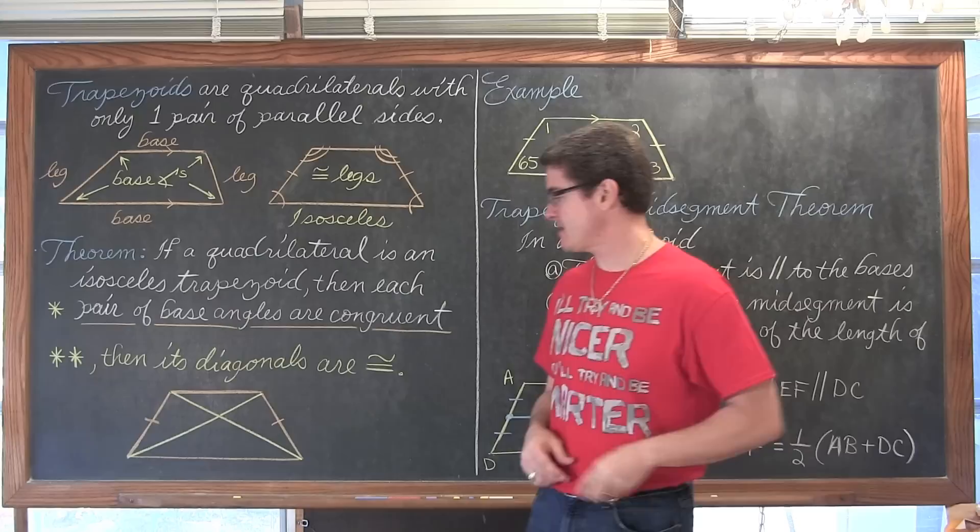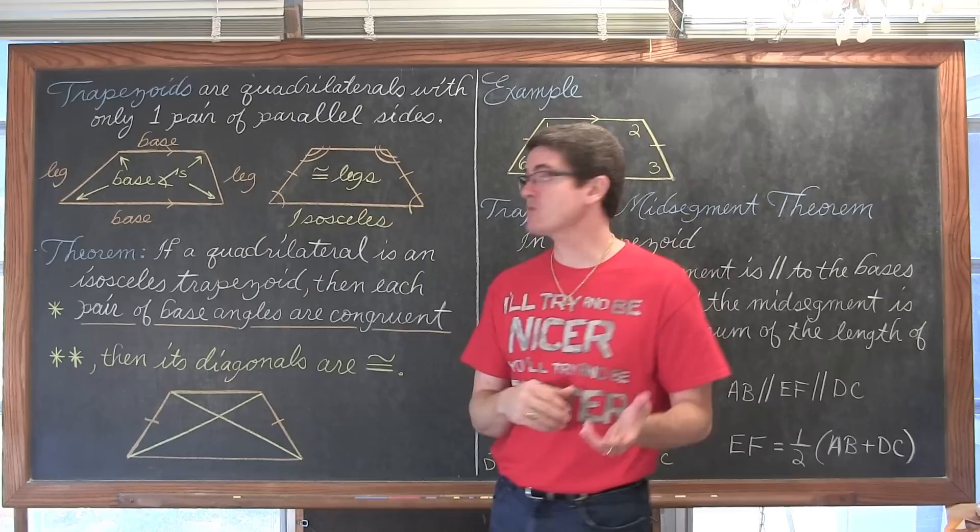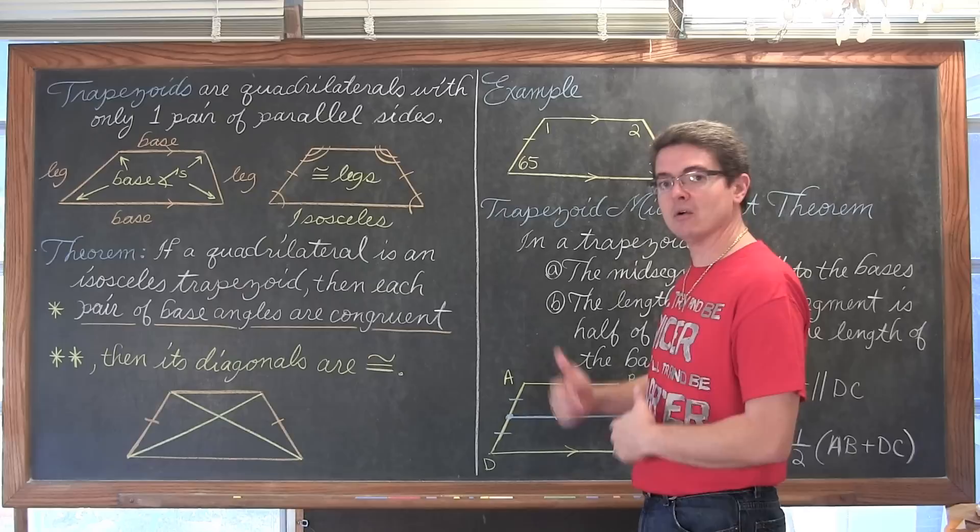A trapezoid is not a parallelogram. Rhombuses, rectangles, and squares are types of parallelograms where you have two pairs of opposite sides which are parallel. In a trapezoid you only have one pair of sides which are parallel.